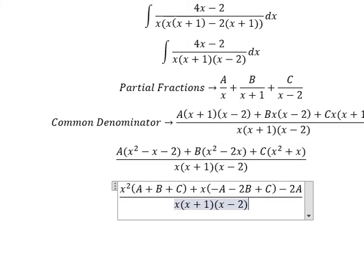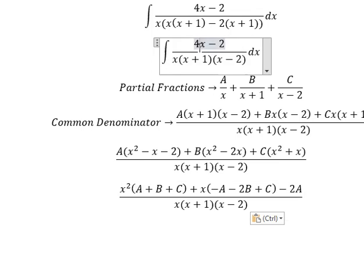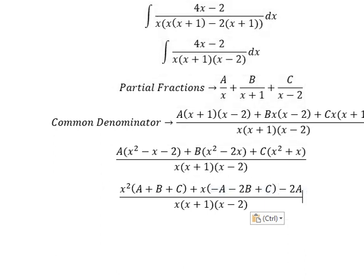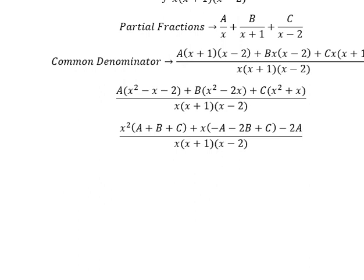We compare coefficients. We have no s squared term, so A plus B plus C equals zero. For s, the coefficient is four, so negative A minus 2B plus C equals four. The constant gives us negative 2A equals negative two. Now we create the system of equations.